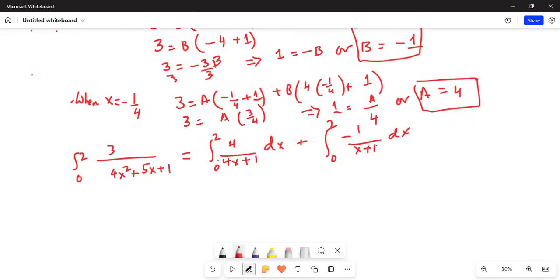I do the integration. It will be integration 4 divided by 4x plus 1 is ln absolute value of 4x plus 1 minus ln absolute value of x plus 1. The limits of integration are from 0 to 2.